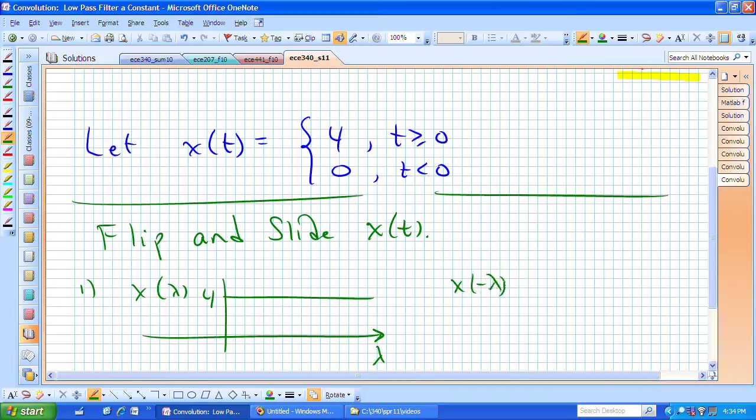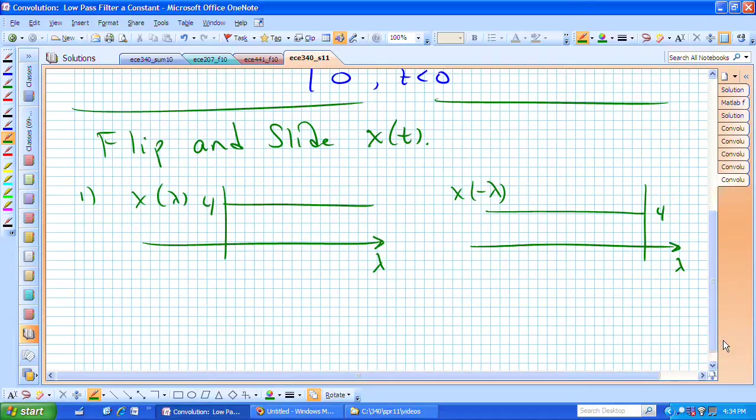x of minus lambda, we simply rotate that through the vertical axis lambda equals 0 and obtain x of minus lambda.